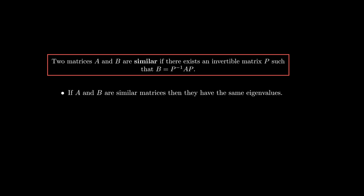Let's begin with the definition of what it means for two matrices to be similar. We say two square matrices of the same dimension, A and B, are similar if there exists an invertible matrix P such that this equation holds. Many properties of matrices are invariant under this relation of similarity. For instance, if A and B are similar then they have the same trace, and also they will have the same eigenvalues.